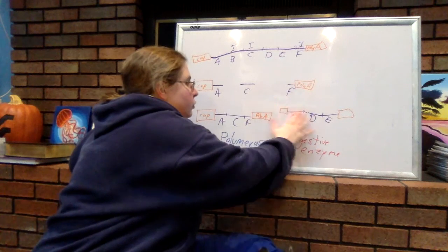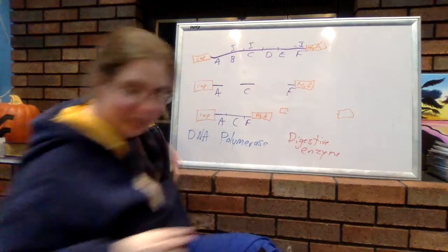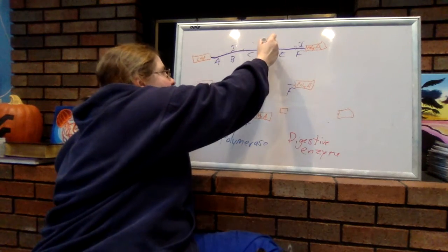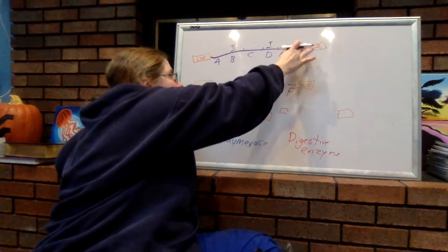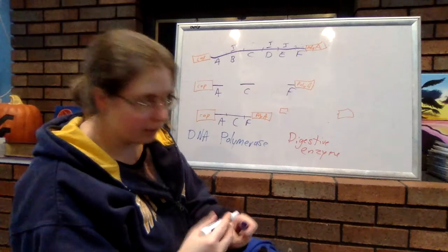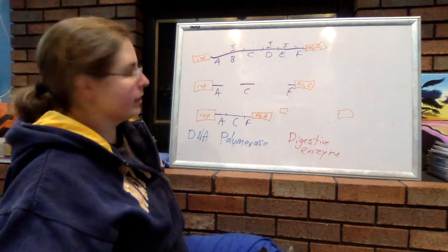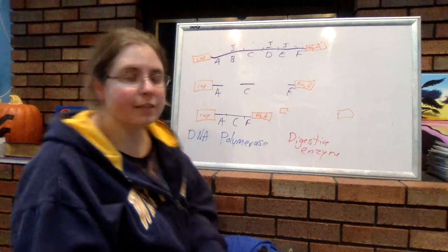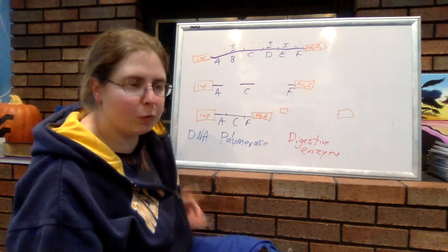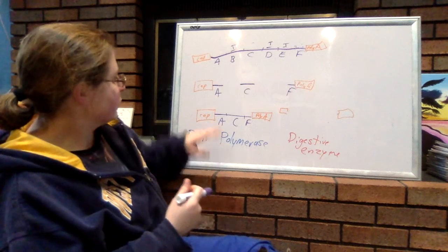We can also have what's called exon shuffling. So, maybe we cut out the same parts we did before. So, originally we had B, D, and E be the introns. In exon shuffling, we cut out the same parts. The same things are considered introns. But instead of just pushing everything back together, it gets rearranged. Like when you shuffle a deck of cards, you rearrange the order of the cards.